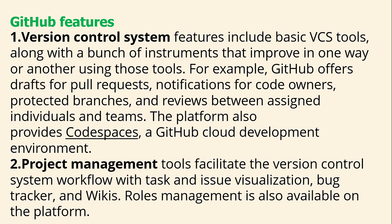There are many features in GitHub. First is the version control system. The VCS feature includes VCS tools along with instruments that improve the use of these tools. For example, GitHub offers draft pull requests, notifications for code reviewers, protected branches, and reviews between assigned individuals and teams. The platform also provides Codespaces, a GitHub cloud development environment. Second is the project management tool, which facilitates the VCS workflow with tasks, issues, visualization, a bug tracker, and wikis. Role management is also available on the platform.